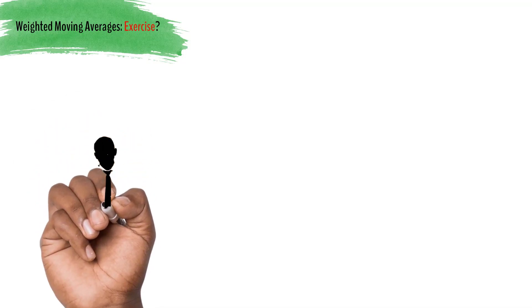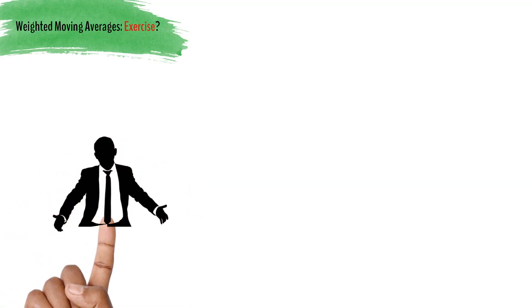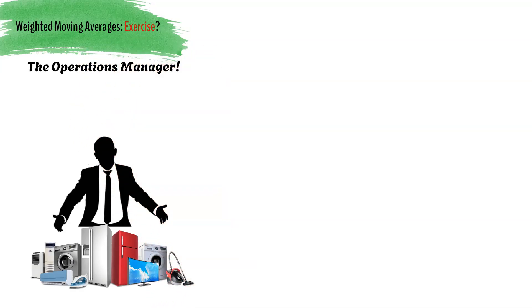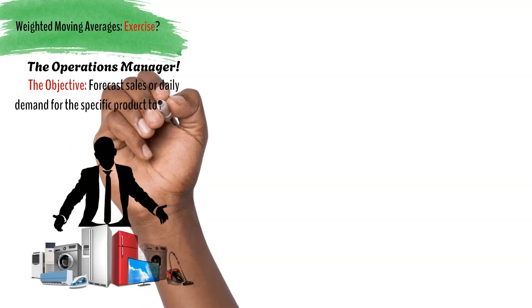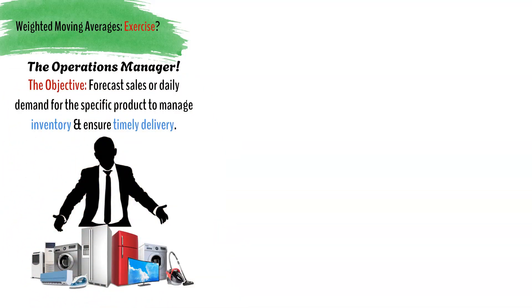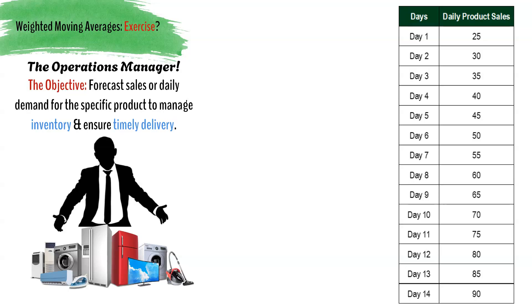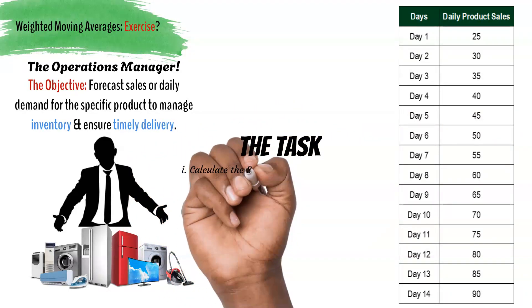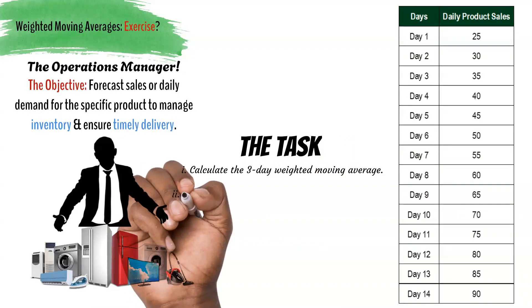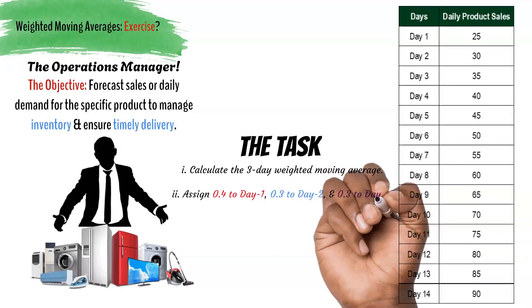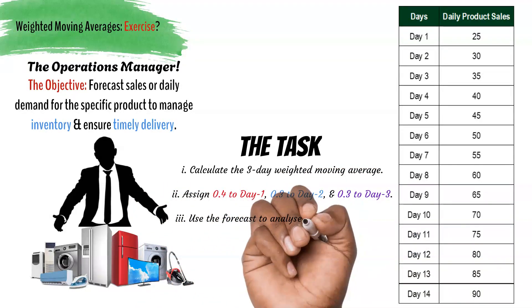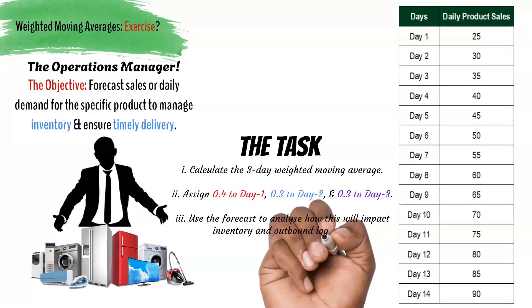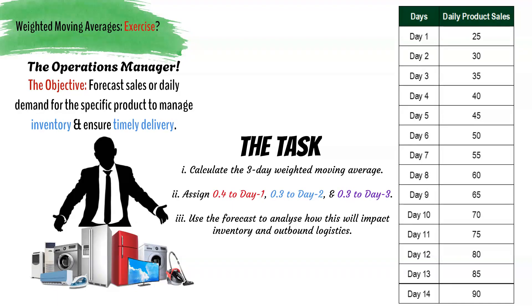It is now your turn. We want you to have a go at using weighted moving average to forecast when planning and controlling operations and supply chain. In this scenario, you are an operations manager for an e-commerce company specializing in electronics. You need to forecast the daily demand for a specific product over the next two weeks to manage inventory and ensure timely deliveries. You have historical data for the past 14 days. Using a three-day weighted moving average with weights of 0.4 for the most recent day, 0.3 for the day before, and 0.3 for the day before that, calculate the daily sales forecast for the next 14 days and consider how these forecasts impact your inventory and logistics planning.